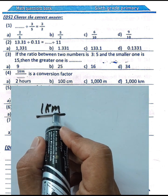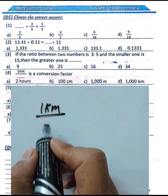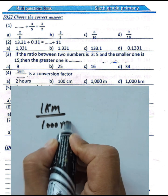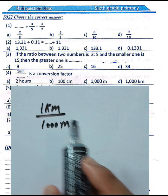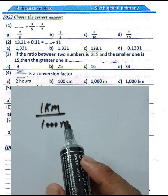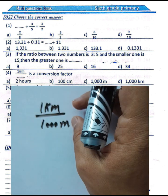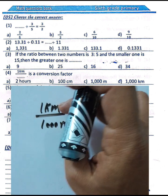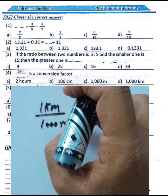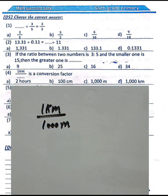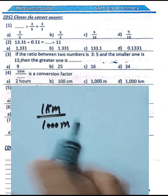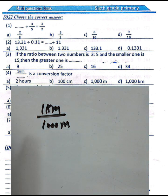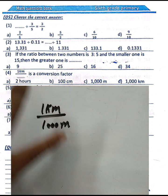Question number four: one kilometer over one thousand meters is a conversion factor. A conversion factor is a ratio comparing two equal amounts using different units. Here, one kilometer is equivalent to one thousand meters, so we are comparing kilometers and meters.